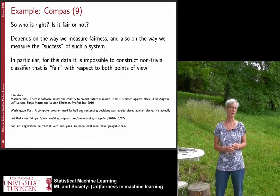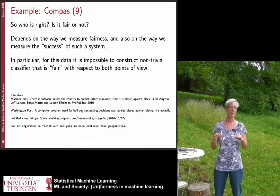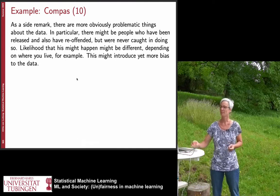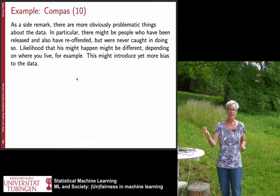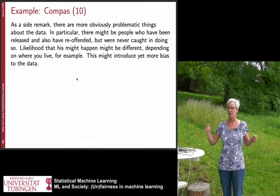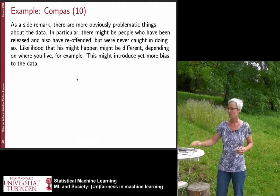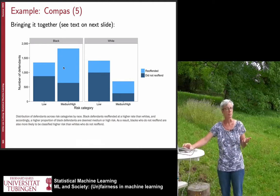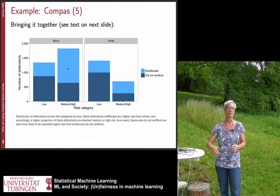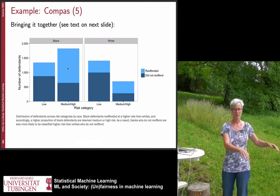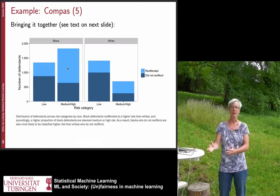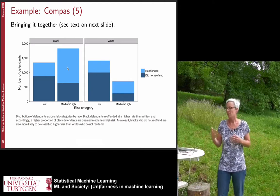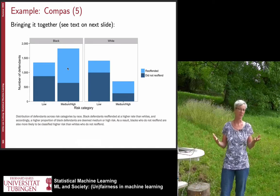There is extensive literature on this topic — typing 'COMPAS' into Google yields many results to help you form your own opinion. One additional issue: when do you know a person re-offended? You can only know this for persons who were released. For someone who was not released, you cannot record whether they would have re-offended. This is a highly biased way of measuring re-offending, because the only people in your data are those who were released.